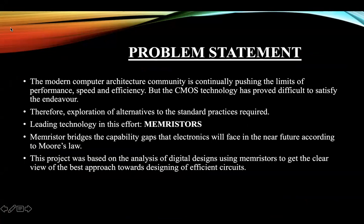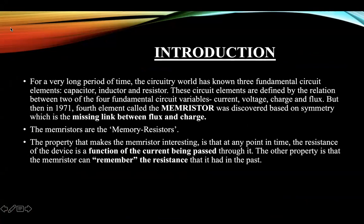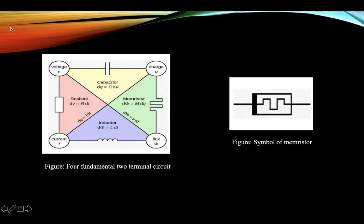According to Moore's law, Memristors bridge the capability gaps that electronics will face in the near future. But what is a Memristor? For a very long period of time, the circuitry world had known three fundamental circuit elements — the resistor, capacitor, and inductor — defined by the relationship between the fundamental circuit variables: current, voltage, charge, and flux. But there was a missing link between flux and charge, which in 1971 was discovered by Leon Chua, called the Memristor, the memory resistor.